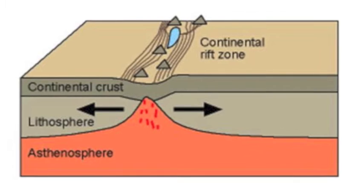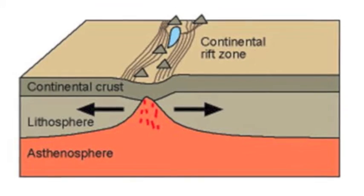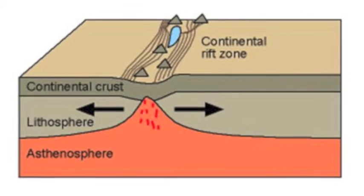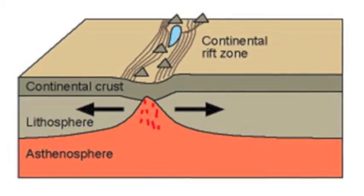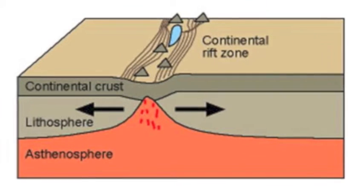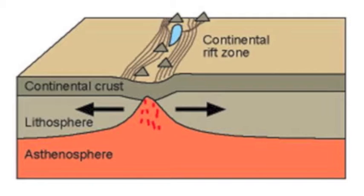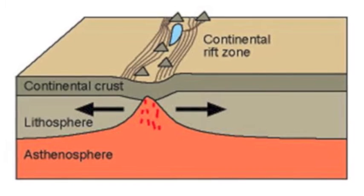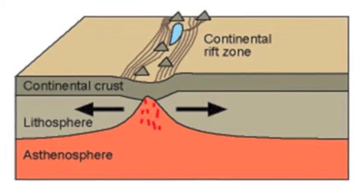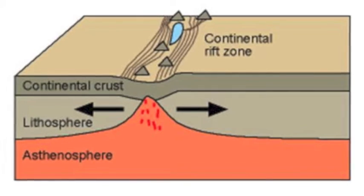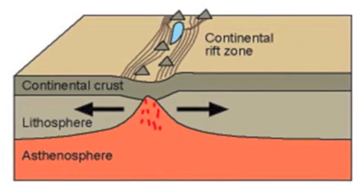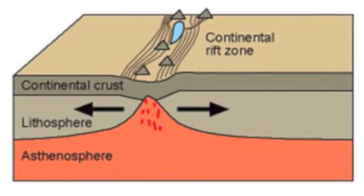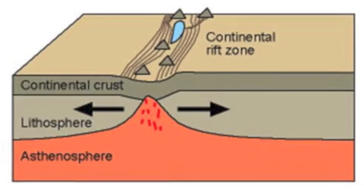Divergent plate boundaries occur between oceanic plates. Divergent boundaries also form volcanic islands, which occur when the plates move apart to produce gaps which molten lava rises to fill.